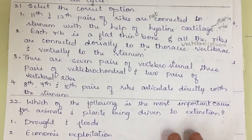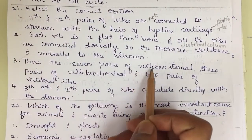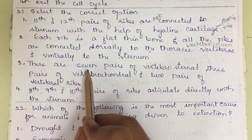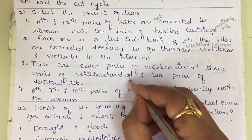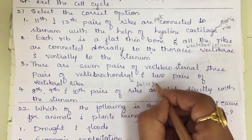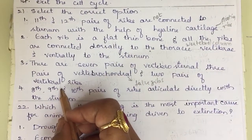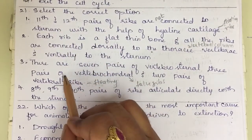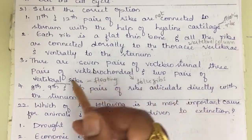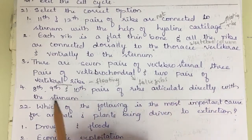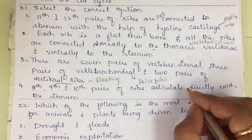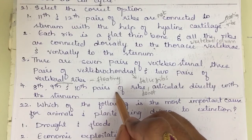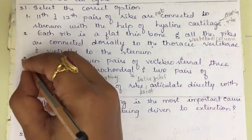Statement three says there are seven pairs of vertebrosternal, three pairs of vertebrochondral (false ribs), and two pairs of vertebral ribs (floating ribs, i.e., 11th and 12th). This statement is correct with no errors. Statement four says the 8th, 9th, and 10th pairs of ribs articulate directly with the sternum — this is wrong, as they do not articulate directly. Therefore, the correct answer is statement three.